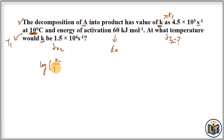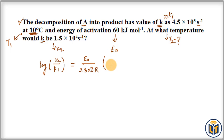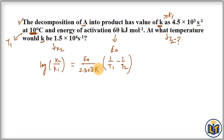We can apply the Arrhenius equation and calculate temperature T2. The Arrhenius equation is: log(K2 / K1) = EA / (2.303 × R) × (1/T1 − 1/T2), where EA is the energy of activation and R is the gas constant with a value of 8.314 joules per mole K.